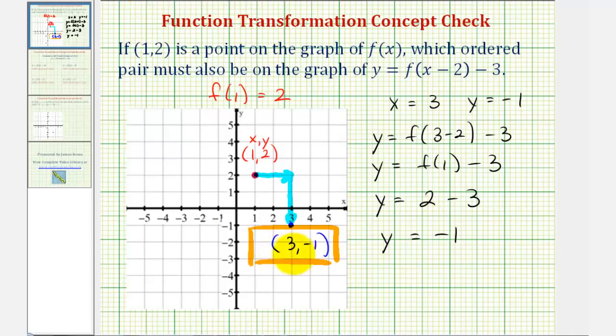So whichever way we look at it, point (3,-1) must be on the function y equals f(x - 2) - 3.